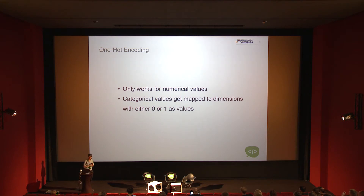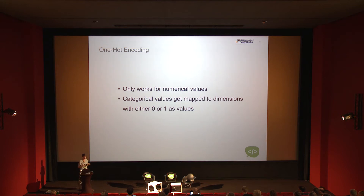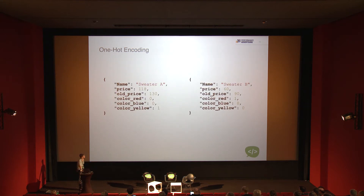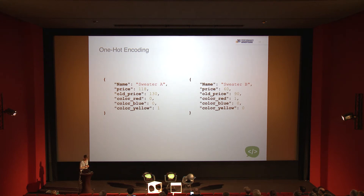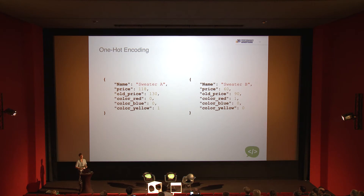What you can do in this case is called one-hot encoding, where you take all the attributes you want and map them to additional dimensions. Each dimension gets either a 0 or a 1. For example, if sweater A is yellow, you add three more dimensions — two are 0, one is 1. The downside is you can no longer draw nice graphs since you now have five dimensions, but the cosine similarity formula works exactly as before.